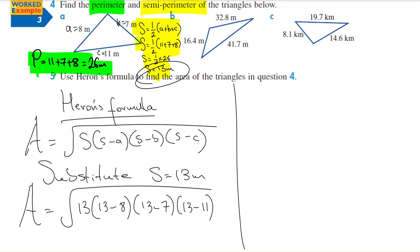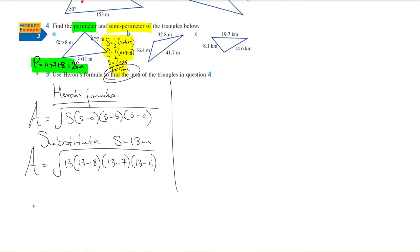To be extra cautious, you simplify it further. Square root—13 minus 8 is what? 5. 13 minus 7 is 6. Why am I putting brackets? You can just multiply those together.